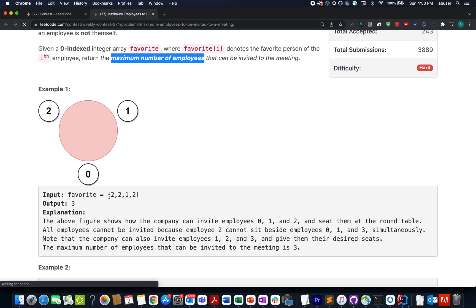Here they've provided an example where favorites is specified as 2, 2, 1, 2. This is one possible arrangement where the employees can be invited. The total number of employees that can be invited is three. Let's walk through the presentation I've created and try to understand the test cases that will help you understand the question and the approach.